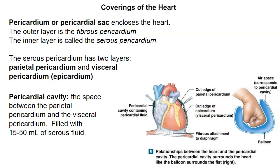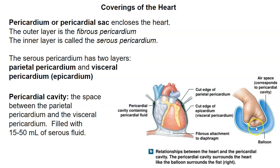Let's examine this a little closer. Let's say that your heart is like your fist. If you were to push your fist into a balloon, you'd see that we have two layers, even though it's continuous. We have an inner layer — that's like the visceral pericardium — and then we have the outer layer, which is like the parietal pericardium.